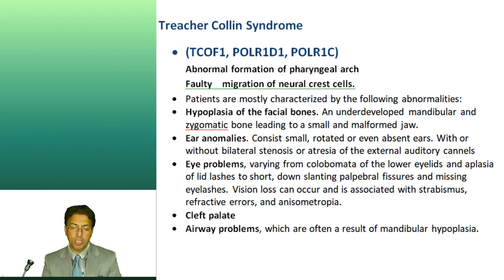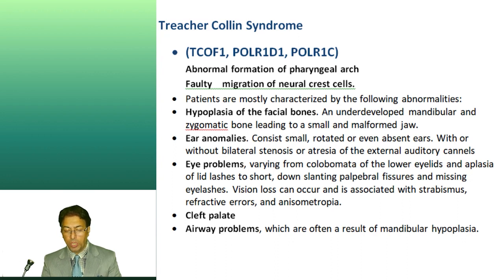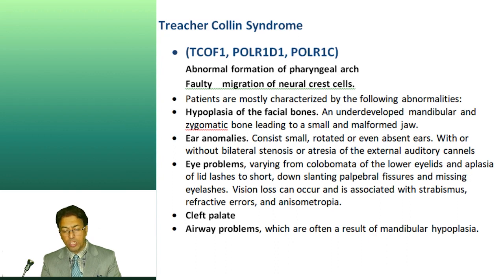Another important condition is Treacher-Collins syndrome and Apert syndrome, caused by faulty migration of neural crest cells leading to abnormal formation of pharyngeal arches. Patients present with features such as hypoplasia of the zygomatic bone, mandibular hypoplasia, facial hypoplasia, oral anomalies, atresia or stenosis of the external auditory canal, and ophthalmological problems like coloboma and aplasia of lashes. There are also cleft abnormalities like cleft palate, and these patients have airway problems due to mandibular hypoplasia.